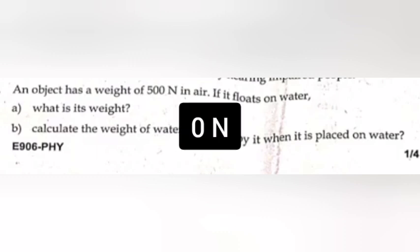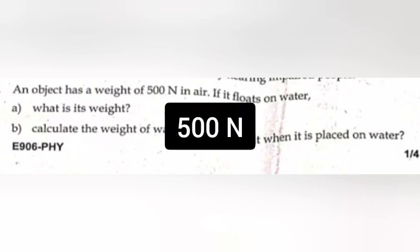7. An object has a weight of 500N in air. If it floats on water, a. What is its weight? Answer: 0N. b. Calculate the weight of the water displaced by it when it is placed on water. Answer: 500N.